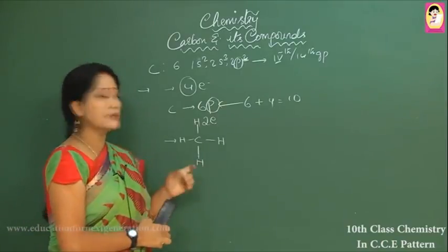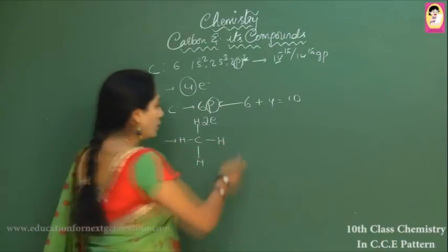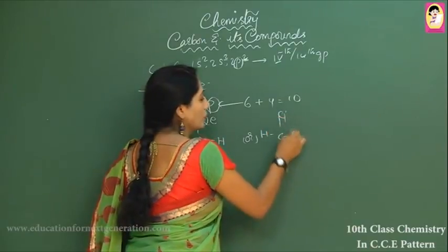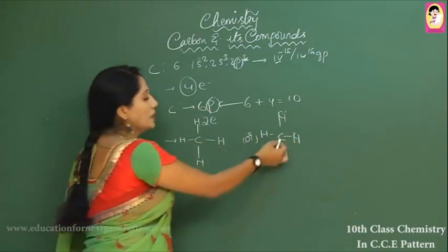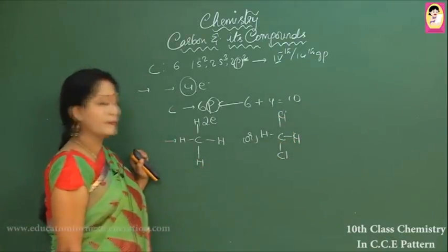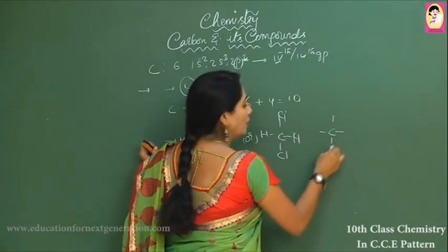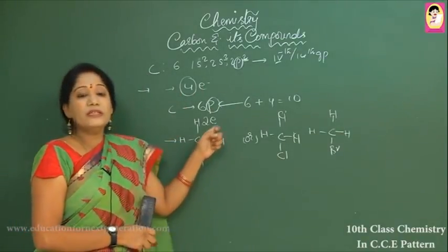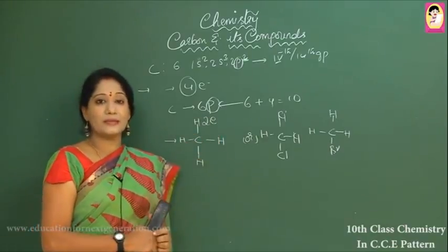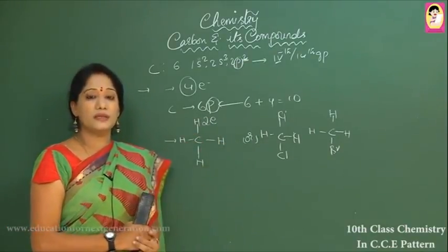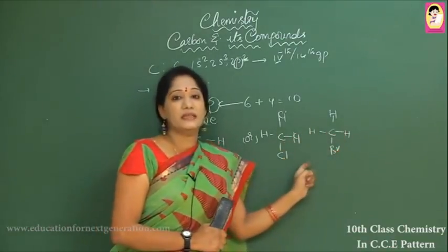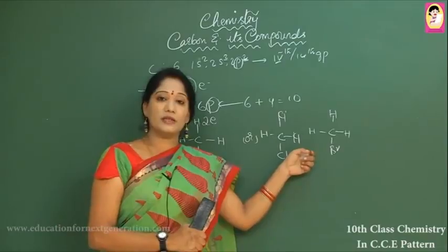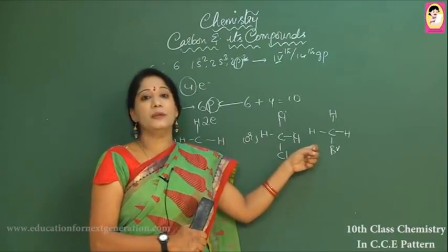For example, in methane the carbon is connected to four hydrogen atoms. In chloromethane, carbon is connected to three hydrogen atoms and one chlorine atom. Another example is bromomethane. Because carbon can neither donate nor accept four electrons, it mutually shares them, forming a tetravalent compound — highly stable in nature.